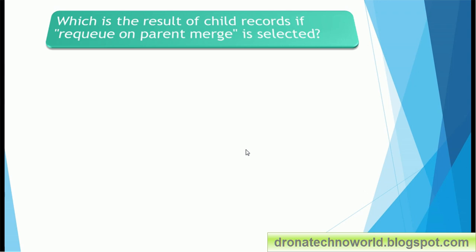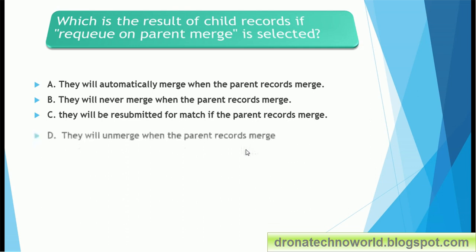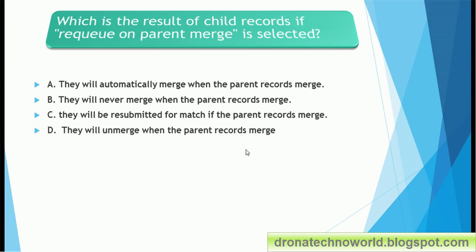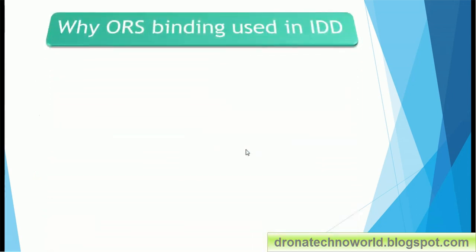Next: which is the result of child records if 'Requeue on Parent Merge' is selected? Option A: they will automatically merge when the parent record merges. Option B: they will never merge when the parent record merges. Option C: they will be resubmitted for match if the parent records merge. Option D: they will unmerge when parent records merge. The correct answer is option C — they will be resubmitted for match if parent records merge.